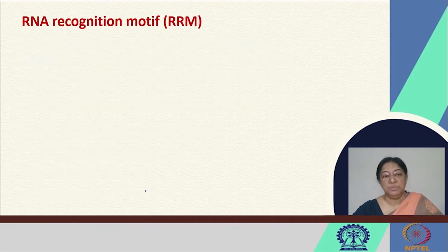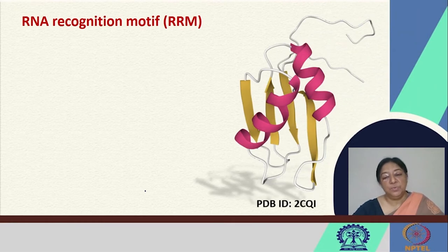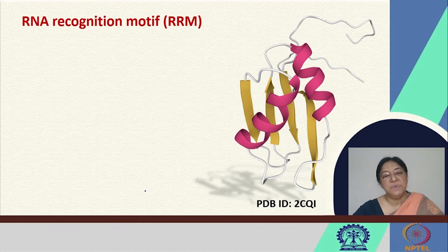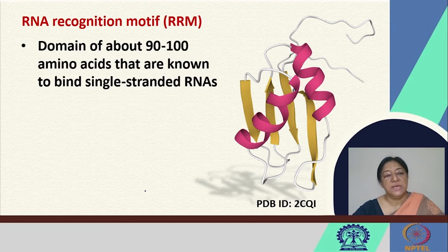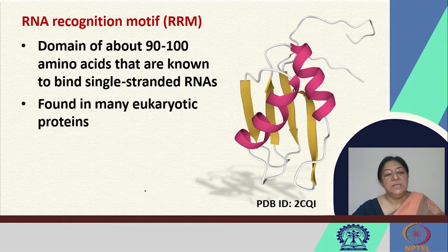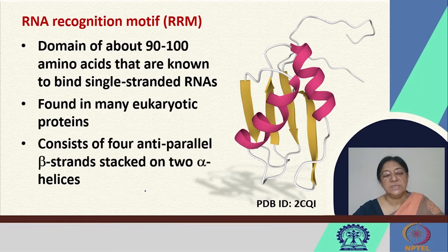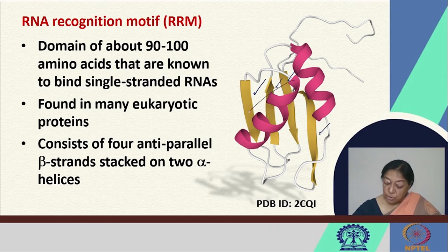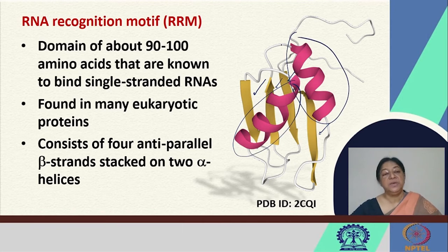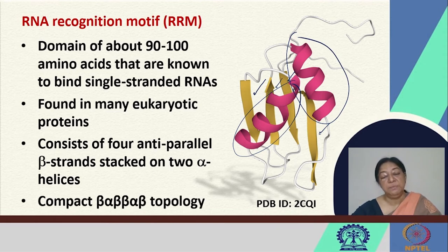When we look at the RNA recognition motif, or RRM, there are specific characteristics of the residues involved and structural importance based on domains with specific secondary structures. The domain is about 90 to 100 amino acids that bind single-stranded RNAs. This is found in many eukaryotic proteins and consists of four anti-parallel beta strands stacked along two alpha helices. The specific recognition motif is referred to as the beta-alpha-beta-beta-alpha-beta topology.